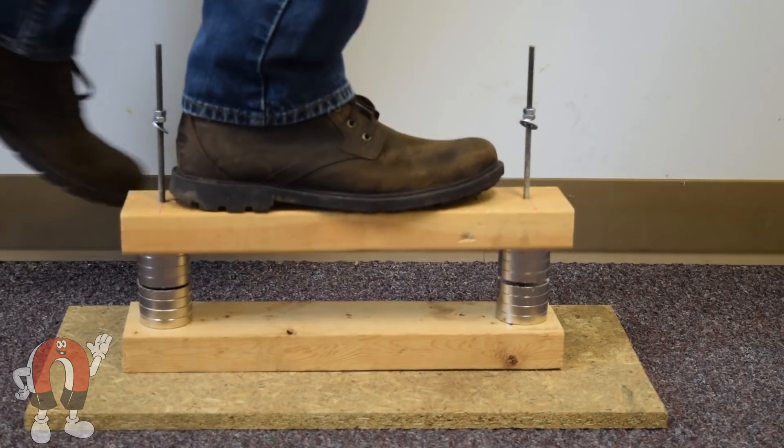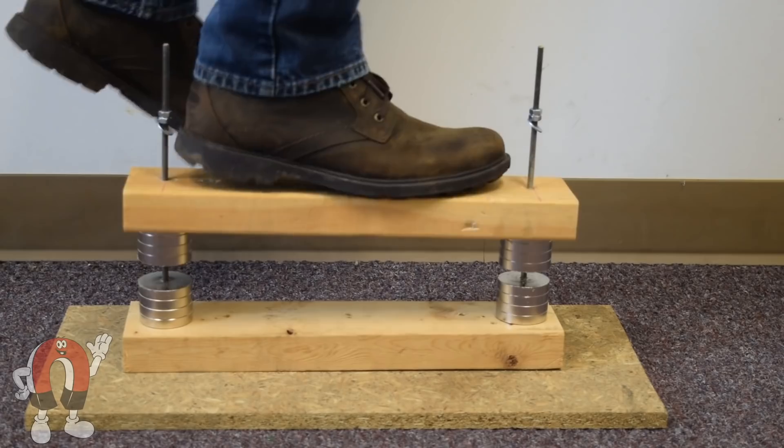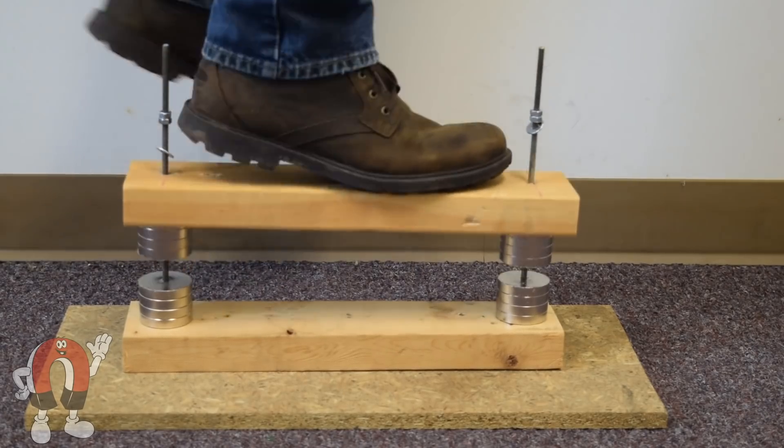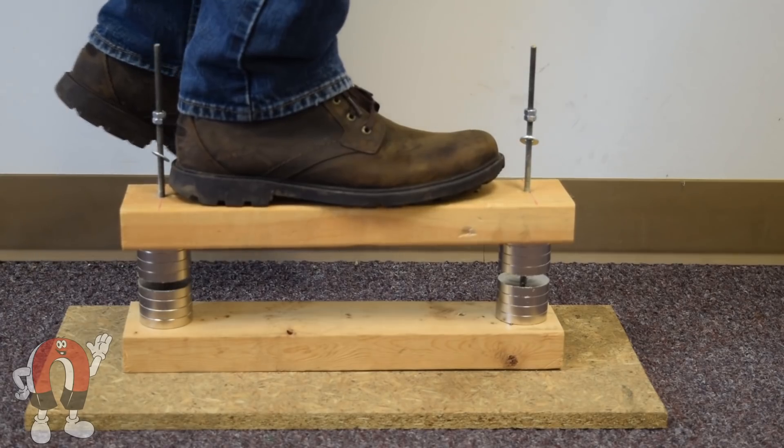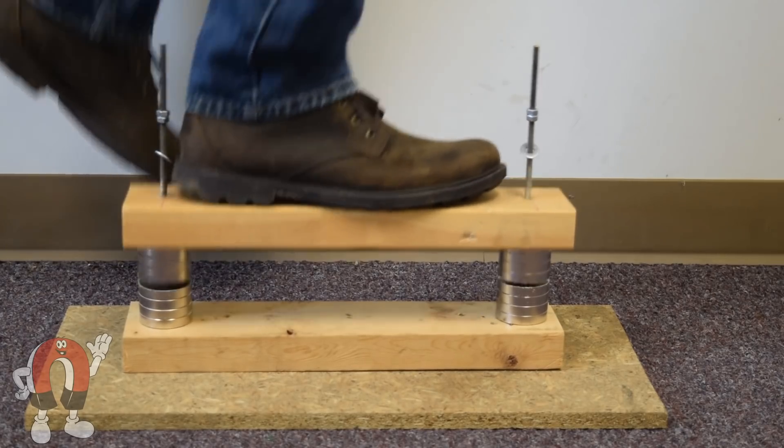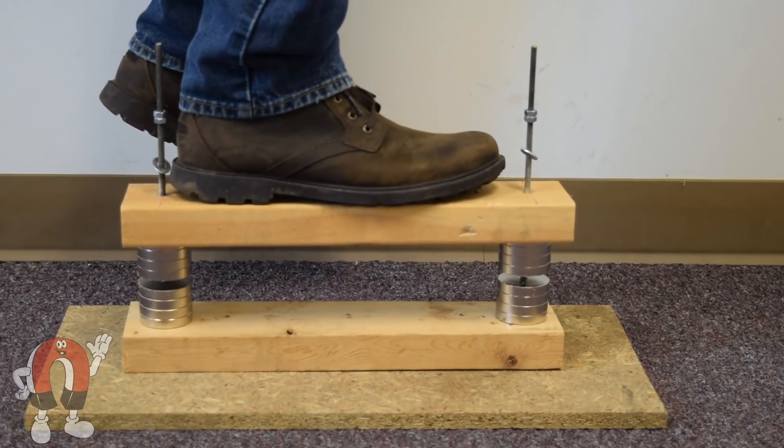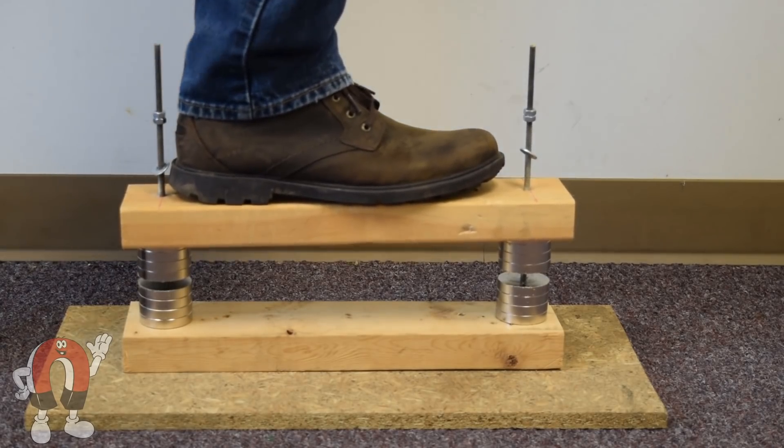Of course with a little heavier load and some more vigorous jumping, we were able to bang the magnets together. The travel in this thing is just a lot shorter than what you get on the pogo stick. It's a good example of repelling magnets, but not a very good pogo stick.